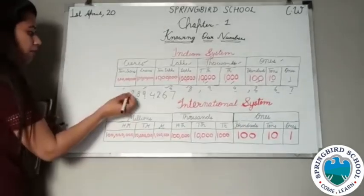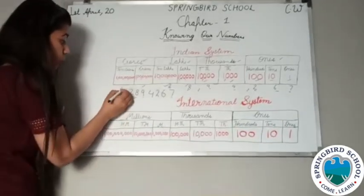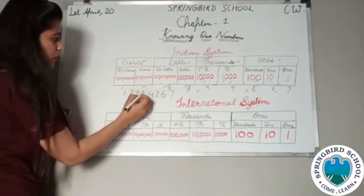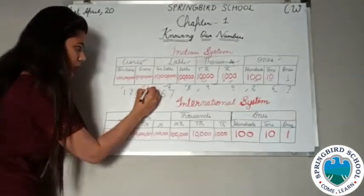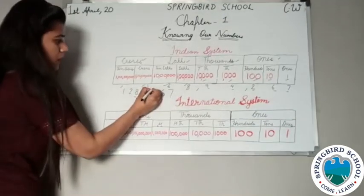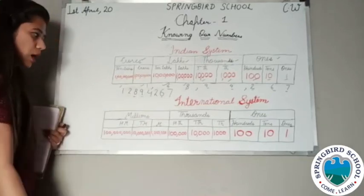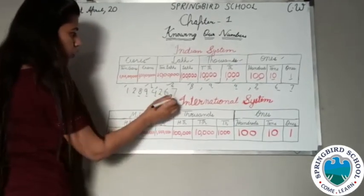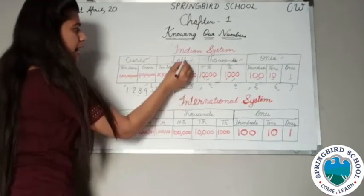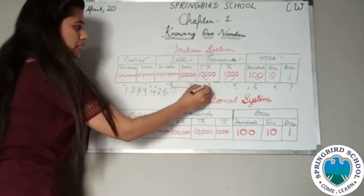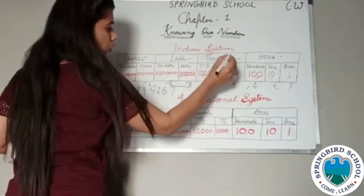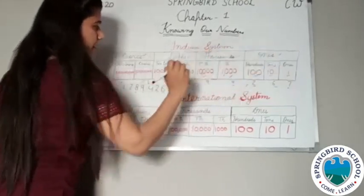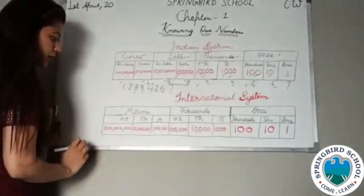Suppose I have added one more number. Where will that number go? It will come at the crore place, and here what will come? A comma. So how do you write in words? One crore, twenty-eight lakh, ninety-four thousand, two hundred sixty-seven. Clear?